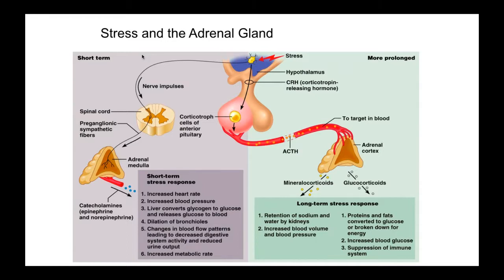Adrenaline or epinephrine is going to increase your heart rate and blood pressure. It's going to convert glycogen — the inactive sugar — to glucose, which is active sugar. It's going to dilate the airway, the bronchioles, so you get more oxygen and more energy.